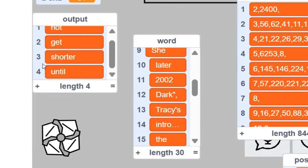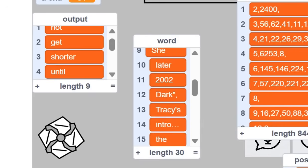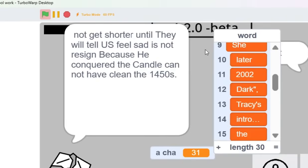Right now, this is just picking random ones, but in the future, I'm going to make it where it has certain types of words it'll pick so that the sentences are more coherent. So if we let it keep on picking over and over again, we can wait to see the final answer. So the final answer it had was not get shorter until they will let the U.S. feel sad, is not resign because he conquered the candle, cannot have clean the 1450s.